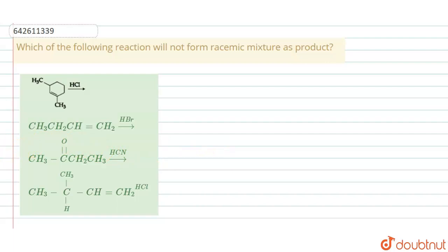which of the following reaction will not form racemic mixture as product. In the options there are reactions in which we have to tell which reaction will not form the racemic mixture as product.